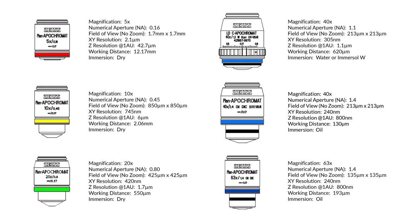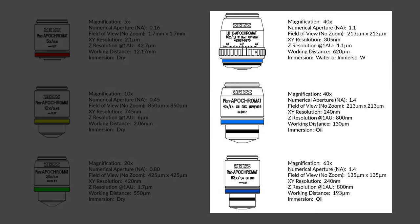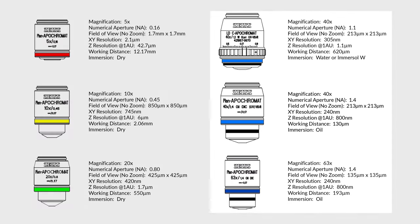Using an oil immersion objective with a specimen mounted in aqueous media, cell culture media for example, will significantly reduce the performance of the objective as you focus further into the specimen, and this problem will be readily apparent on a confocal microscope. If you require an immersion objective, choose one that closely matches the refractive index of your mounting medium for best results.